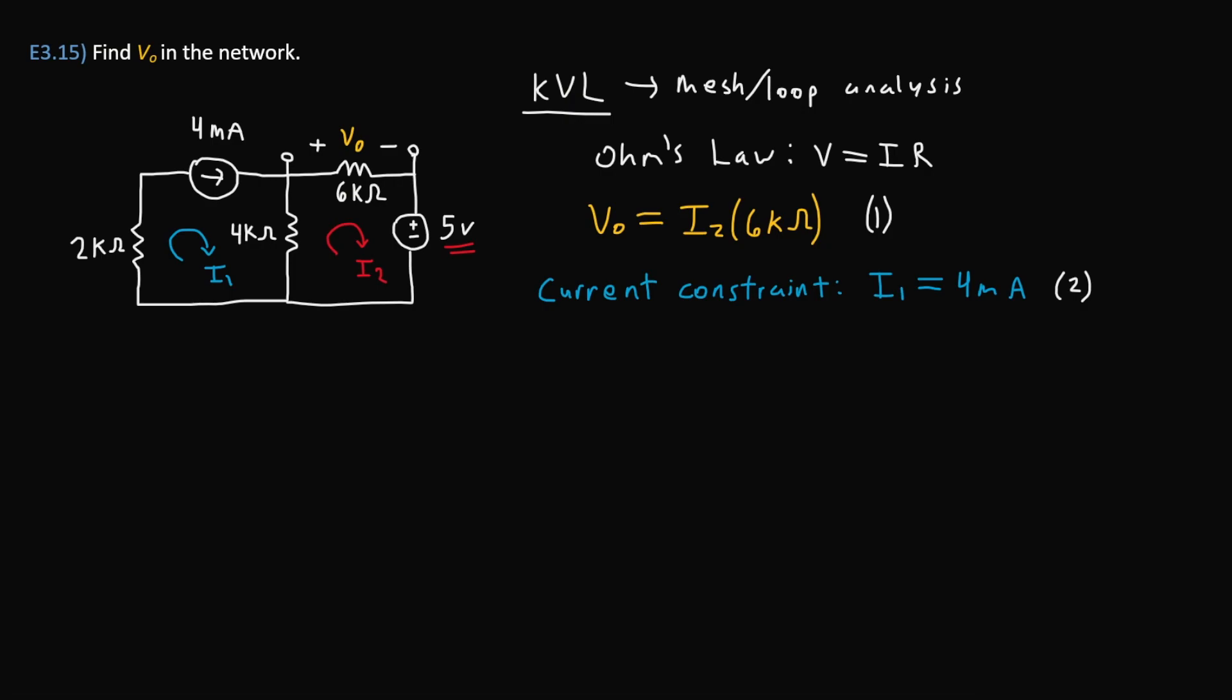Now we can actually start performing KVL on I₂. We are looking at the loop on the right. First of all, here we see that the current is passing through the 4 kilo ohm resistor, but we also see that I₁ is also passing through that resistor, but in the opposite direction, as you can see here, indicated by the arrows. What that means is basically I₁ will be negative in this case, while I₂ will be our positive current.